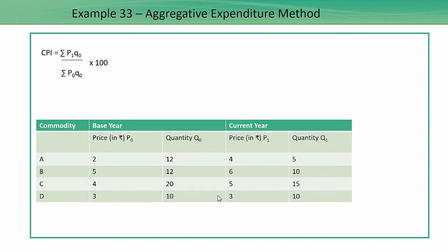This method is very similar to Laspers method which we learned earlier. So CPI equals summation of P1 Q0 divided by summation of P0 into Q0 multiplied by 100.